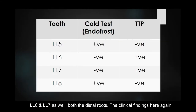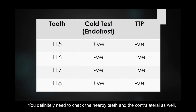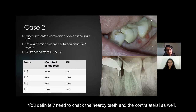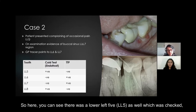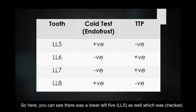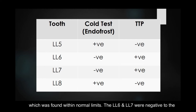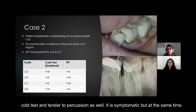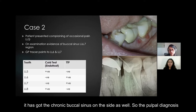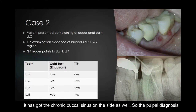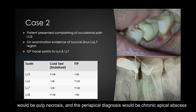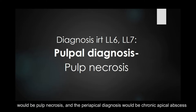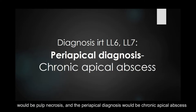Checking the nearby and contralateral teeth, the lower left 5 responded within normal limits. The lower left 6 and 7 were negative to the cold test and tender to percussion. So it is symptomatic, and there is also a chronic buccal sinus present. Therefore, the pulpal diagnosis is pulp necrosis and the periapical diagnosis is chronic apical abscess.